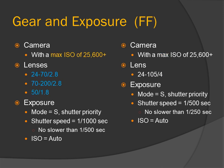Gear and exposure — full frame. Camera with a max ISO of 25600 plus. Lenses: 24-70mm f/2.8 and 70-200mm f/2.8. And for the dim alleys: 50mm f/1.8. Exposure: shutter priority. Shutter speed 1/1000th of a second, no slower than 1/500th of a second. ISO: auto.